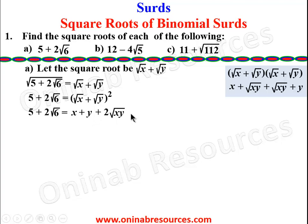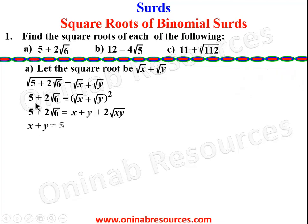Comparing the two sides: x + y is the rational part, while 5 is the rational part on the left, so x + y = 5 — we call that equation 1. For the irrational part, we have √6 on the left and √(xy) on the right, both with 2 outside the root, which means xy = 6 — that is equation 2.